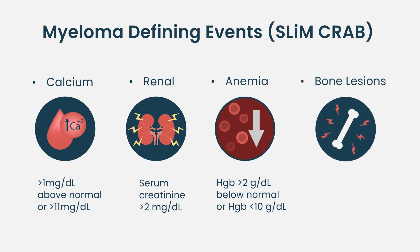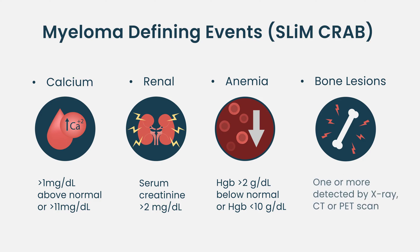The B of the CRAB criteria were bone lesions. Myeloma patients can present with bone changes, with thinning of the bone, as well as pathologic fractures. One or more such bone lesions, if picked up on either an x-ray, CT scan, or PET scan, would satisfy this criterion. These were the original CRAB criteria.